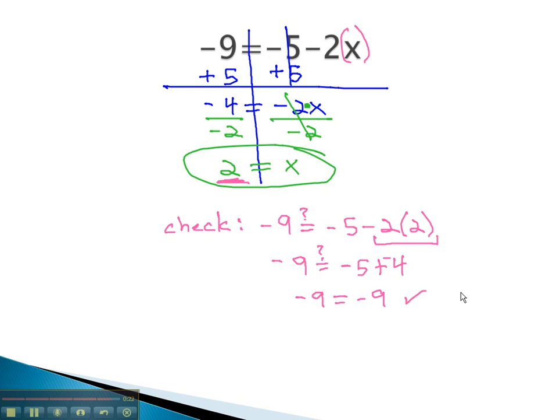We have a true equation, which tells us that our solution is correct. We found the correct solution for x, the correct number to plug in for the variable to make that original equation true. We find it by adding or subtracting the single number first and multiplying or dividing second.